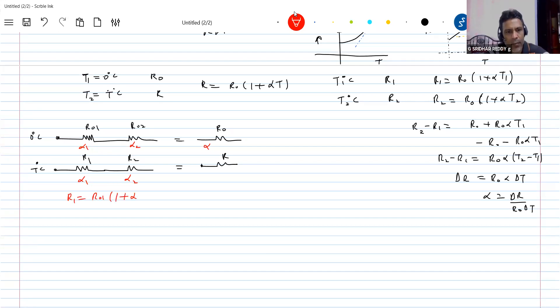You can write the expression. By using that, I can define it from the form. What is R01 times 1 plus alpha 1 T. What is R02 times 1 plus alpha 2 T. What is R0? R0 should be equal to R01 plus R02.